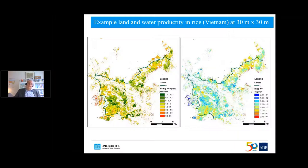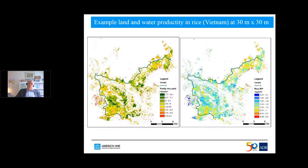At village and community scale, looking at a right bank canal and a left bank canal, we can see tremendous differences in production. Average production is around five tons per year, but some farmers achieve seven or eight tons per hectare per year. This very precise information is difficult to obtain otherwise. On the right-hand side we can see how much water it takes to produce this rice — water productivity varies between 0.4 kilograms per cubic meter up to 2 kilograms per cubic meter, a factor of five or six difference even at community scale. This is very important for accounting: we have to understand local variabilities and the reasons why they occur.